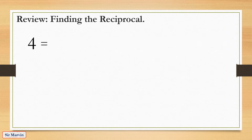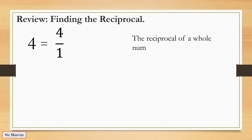Before we proceed, let's have some review on how to find the reciprocal. For a whole number like 4, a whole number has an imaginary denominator of 1, so 4 becomes 4 over 1. The reciprocal of a whole number is 1 over the whole number, so the reciprocal of 4 is 1 fourth.